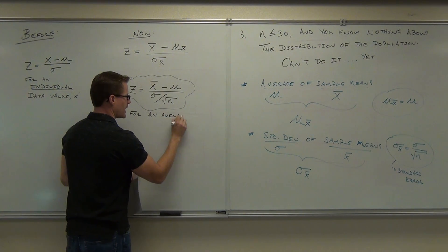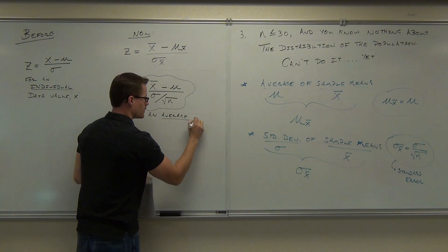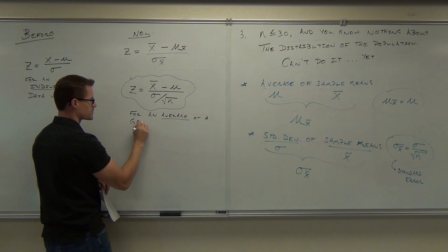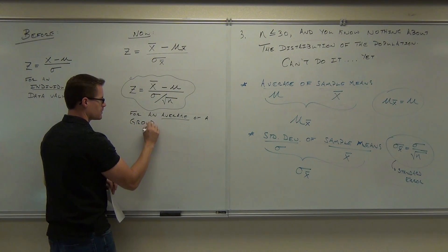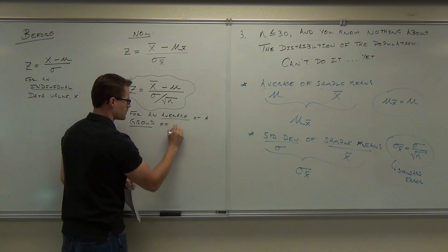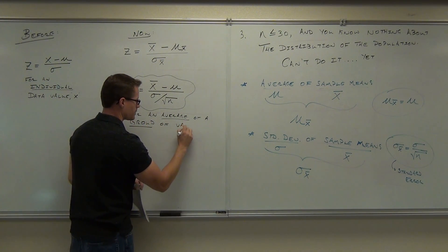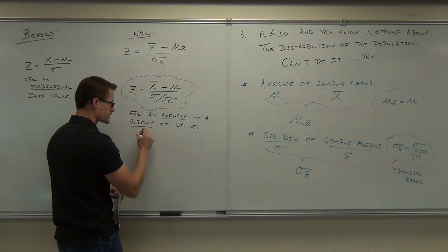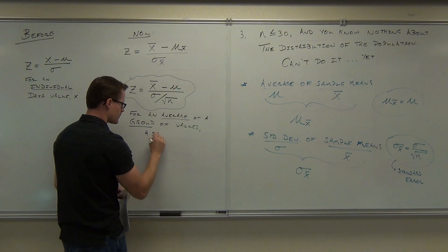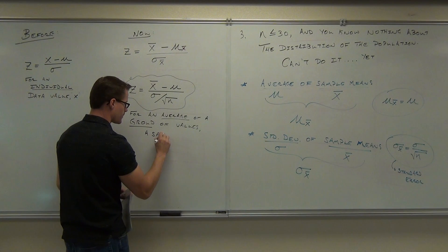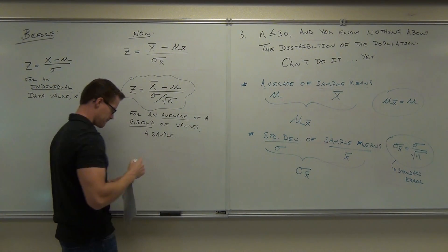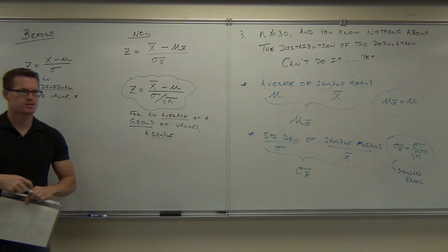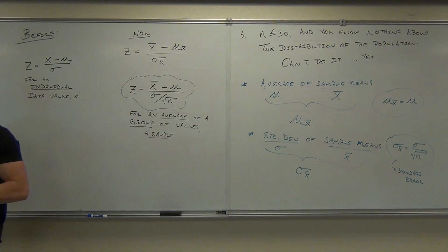That formula is for an average of a group of values — in other words, a sample. That's how you make a transition between an individual and a sample.